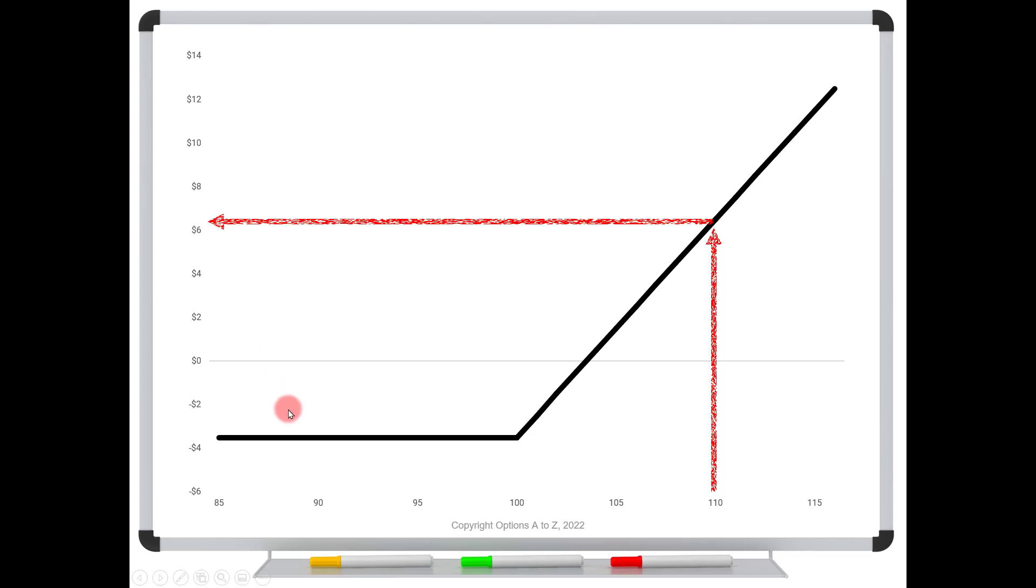So this black line is just showing you all of the values. Notice that at the strike or below, you reach the maximum loss, and that's because the option has expired worthless. And here you would just lose the $350. So that's why this black line lines up right there at $350.